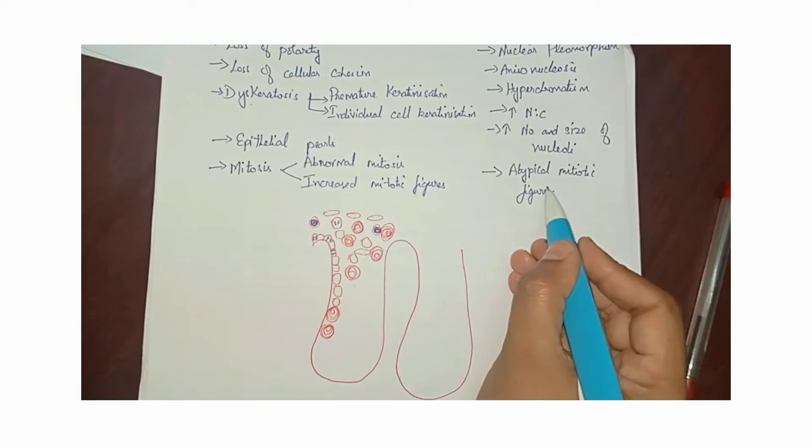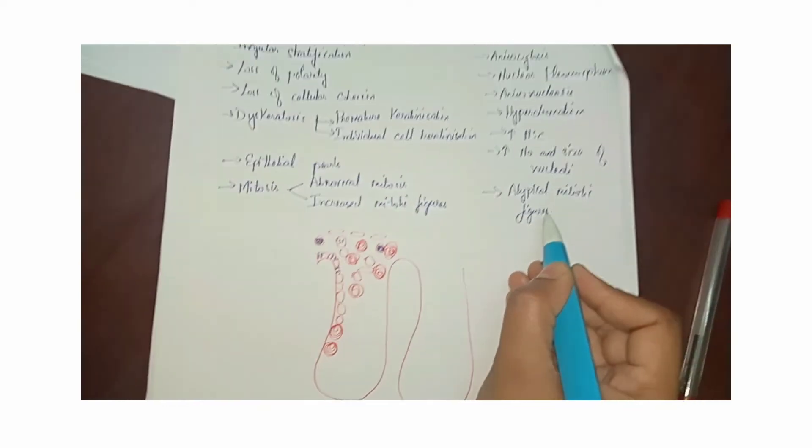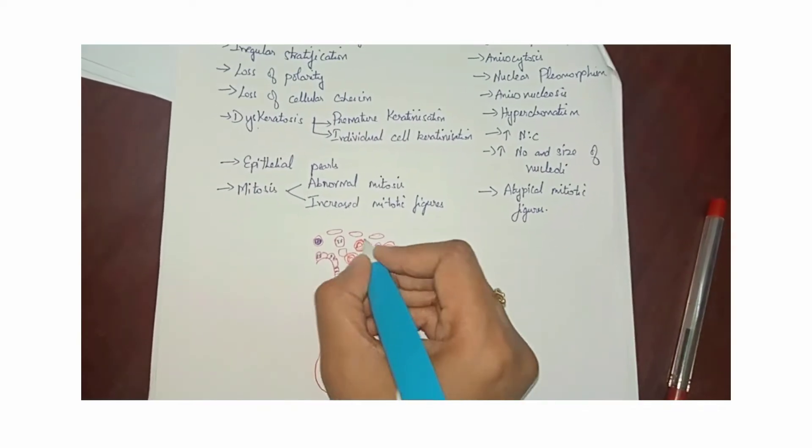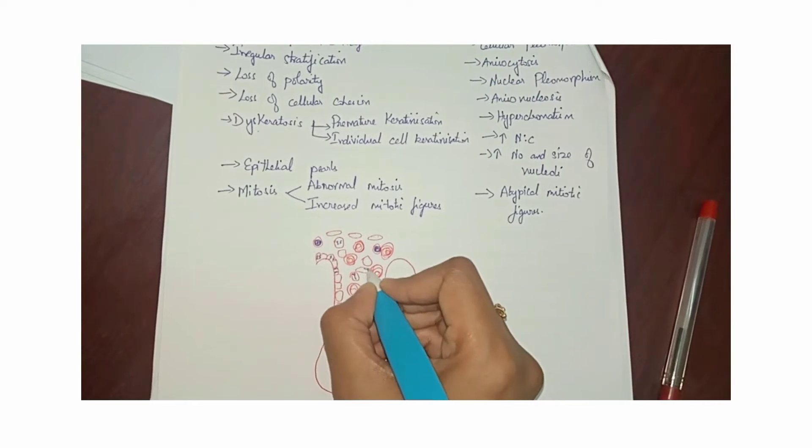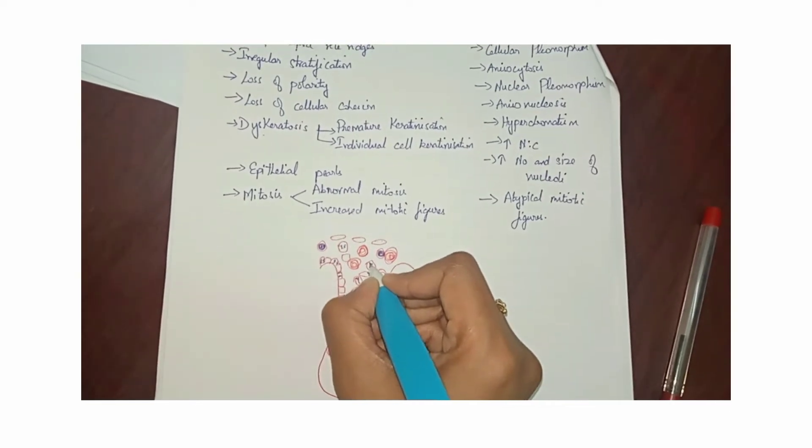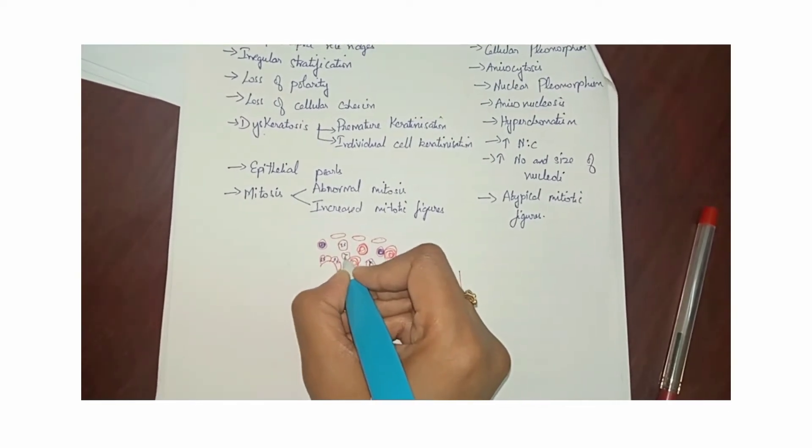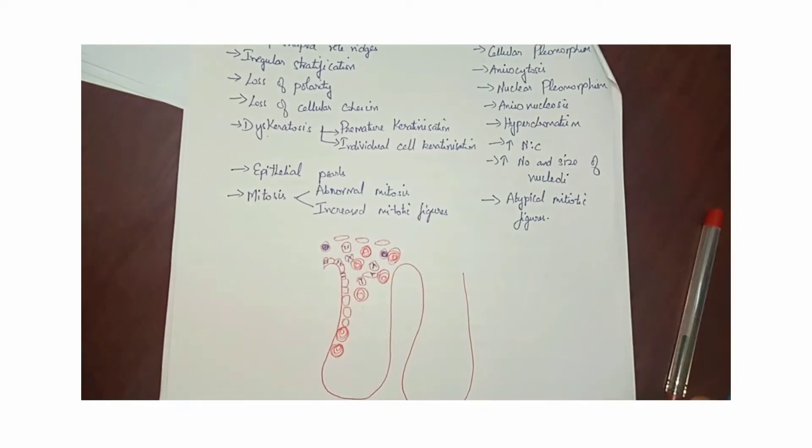At the cellular level, if we see, there is one feature of describing the mitosis as atypical mitotic figure. There is also going to be the presence of atypical mitotic figures.